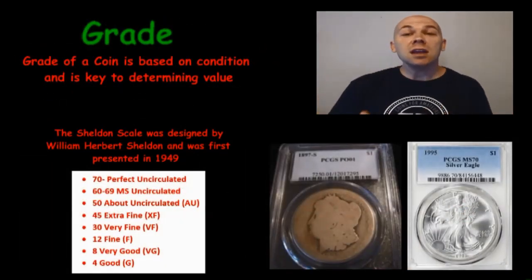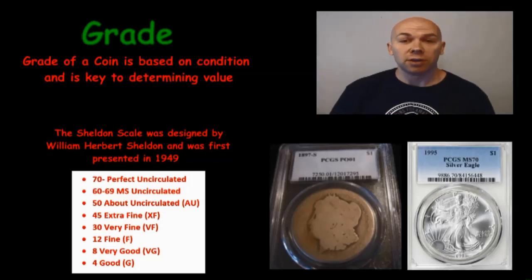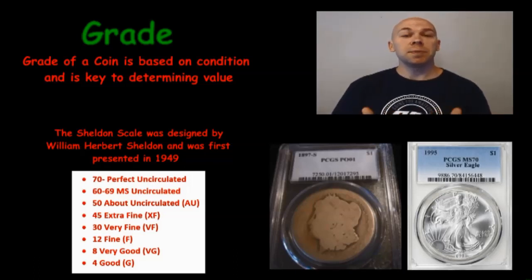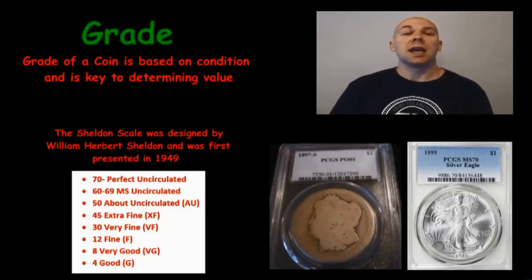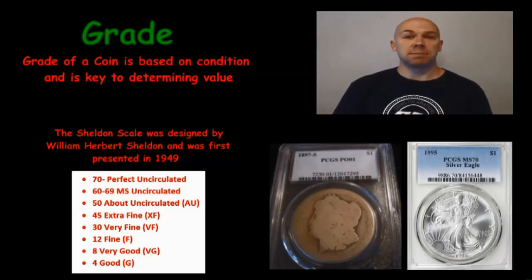Grade. The grade of a coin is the designation given to it based on its condition, and that is a key factor in determining its value. There are several professional grading companies out there with the most notable being PCGS and NGC. Typically, grades are assigned using what's called the Sheldon Scale, which goes from 1 through 70, with 70 being a perfect specimen.